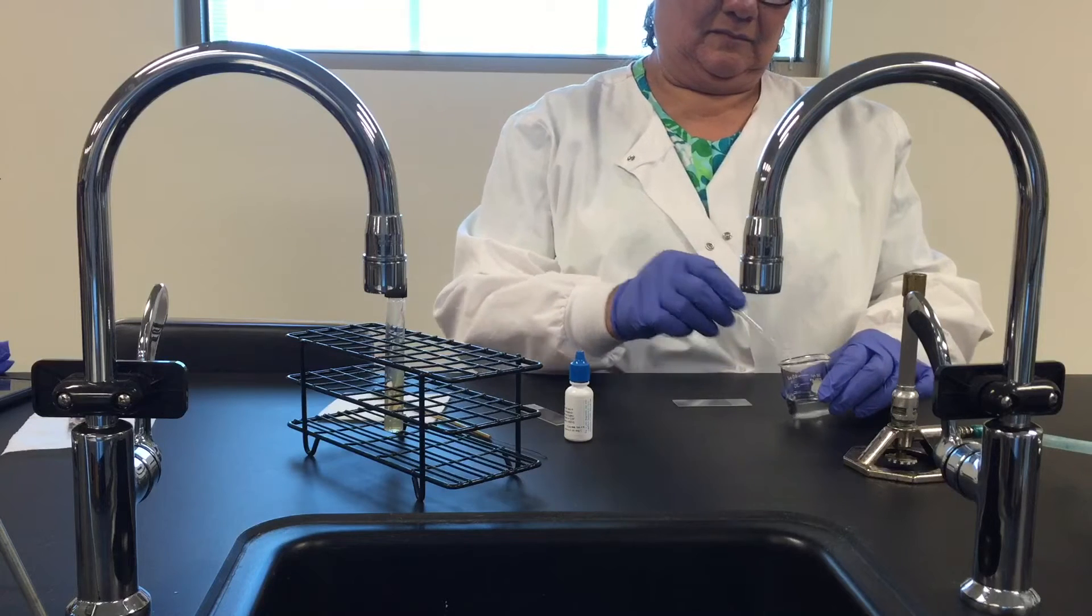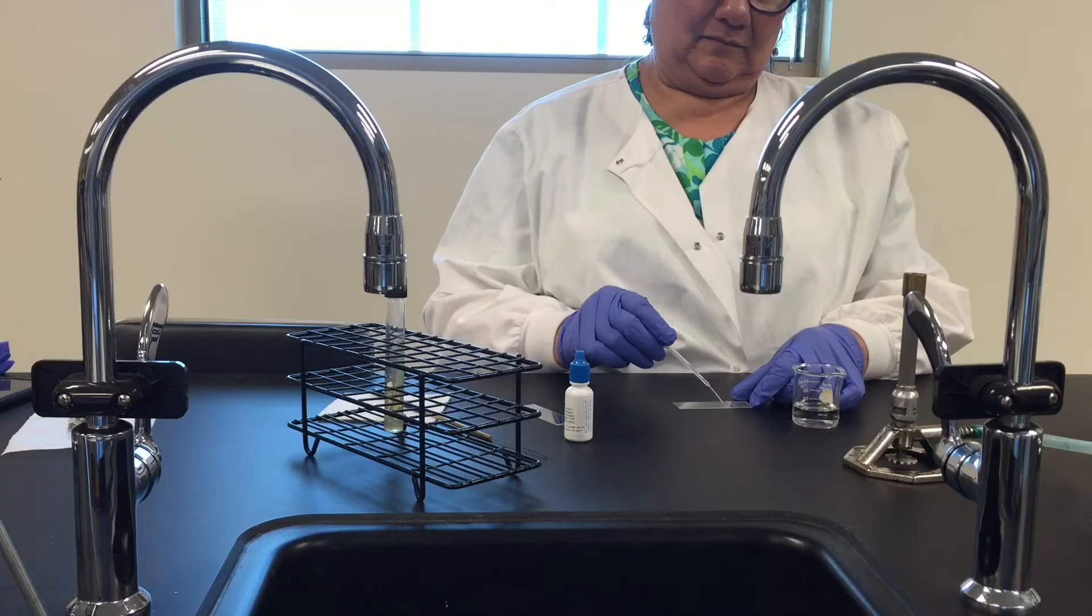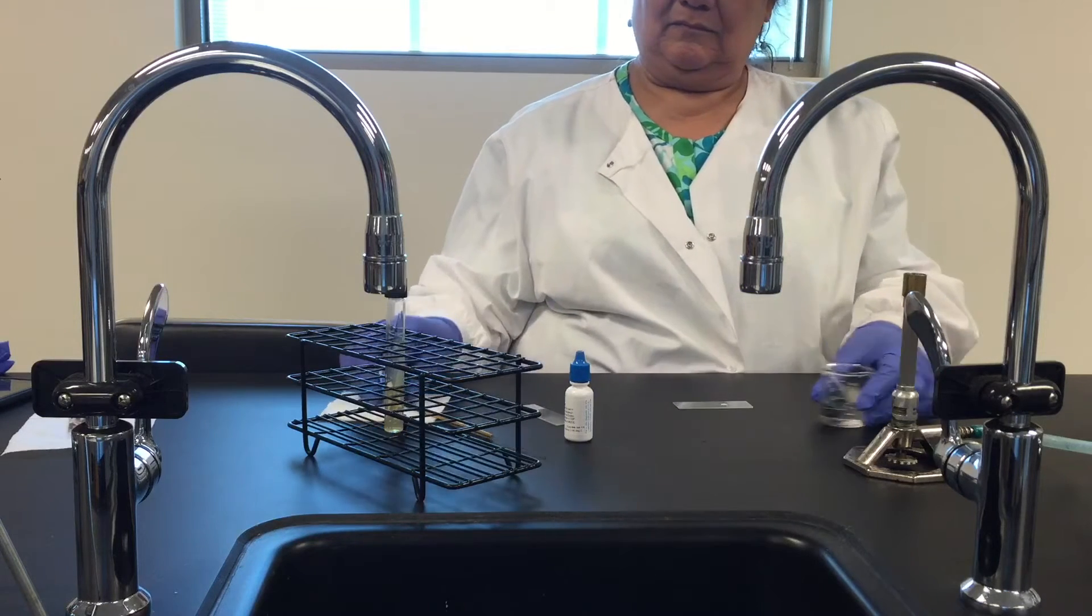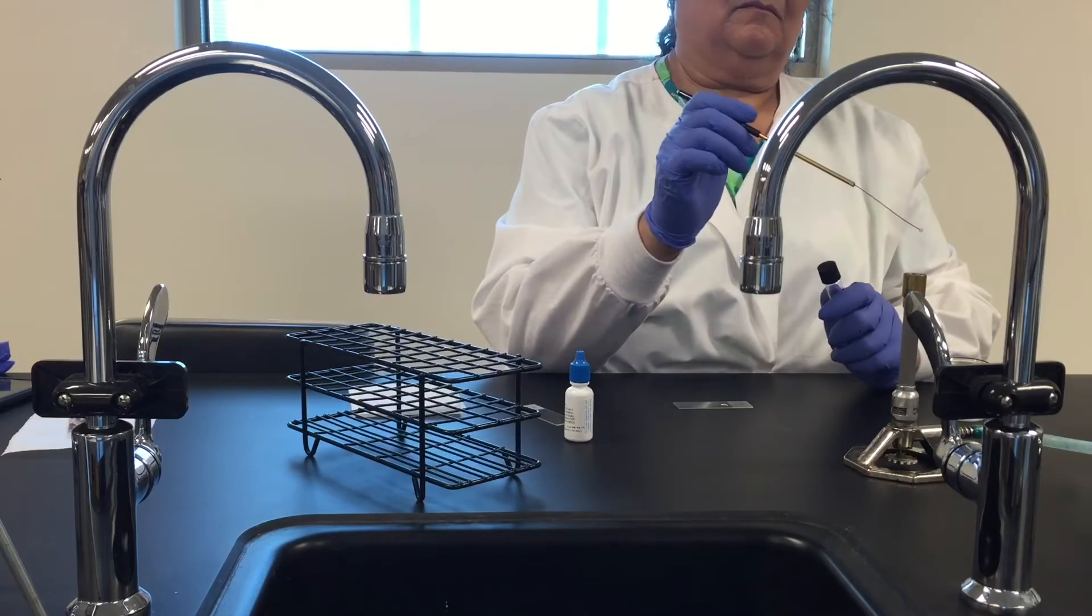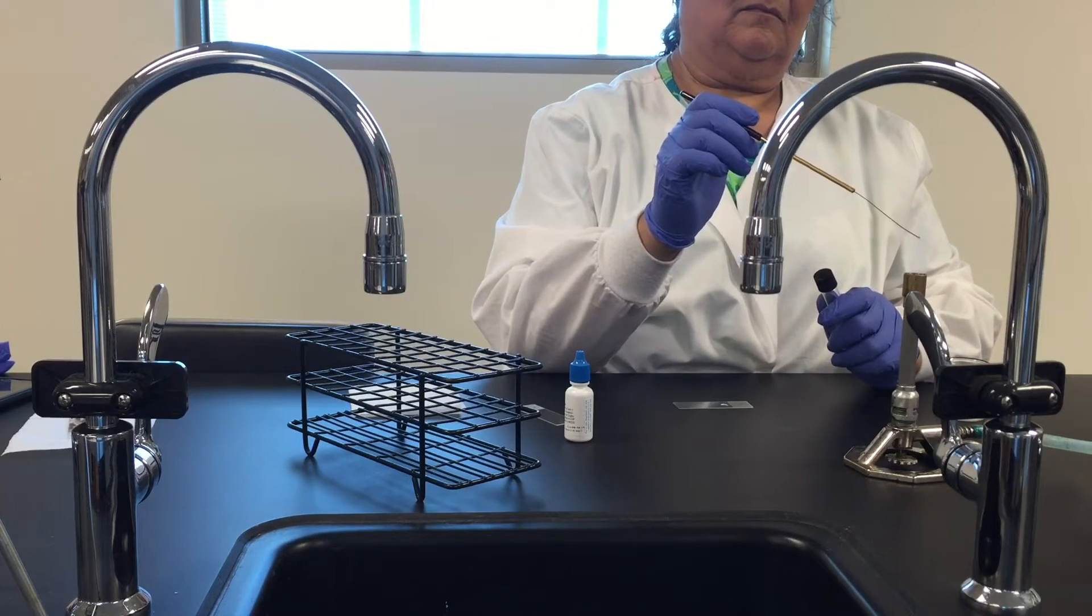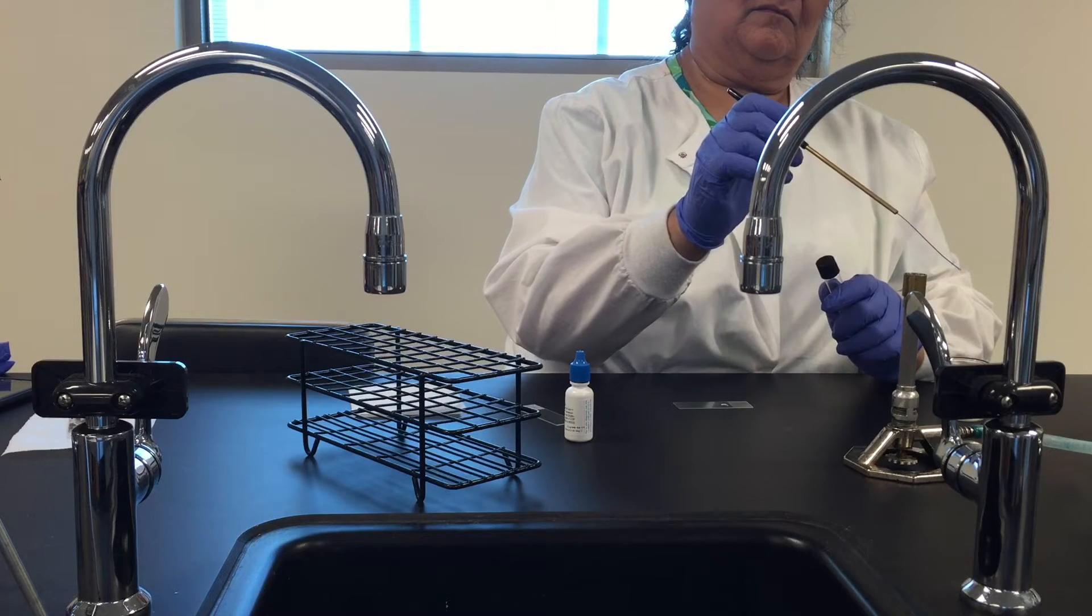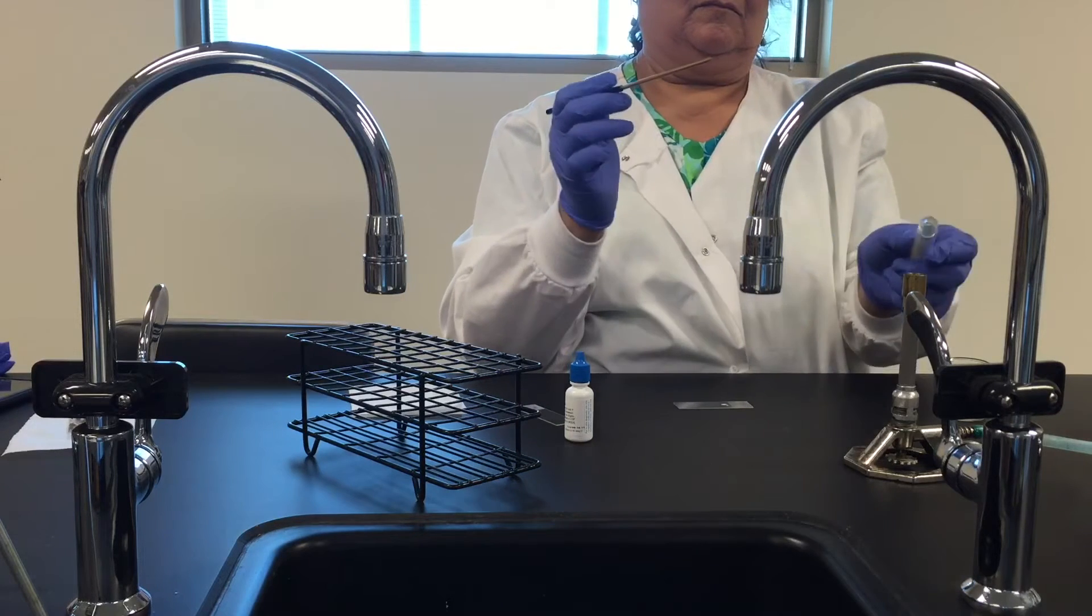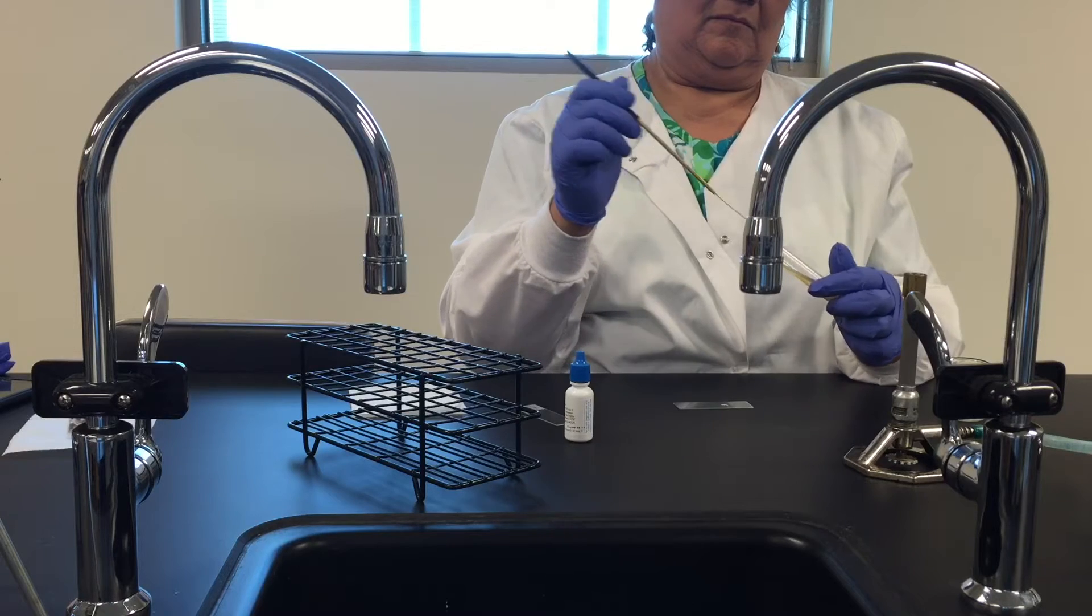We're going to start with a nicely scrubbed down microscope slide, use a pipette to put a couple of drops of water at one end of the slide, then we will aseptically remove a little bit of the organism from the slant that Renee prepared and that organism will get mixed into the drop of water. Now we're not going to spread it out at this point, we're just going to mix the organism into the drop of water.